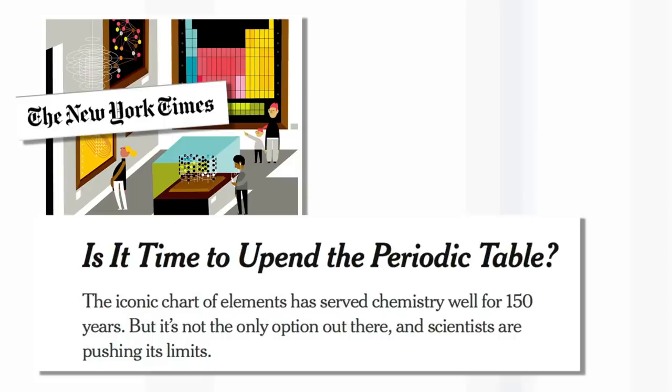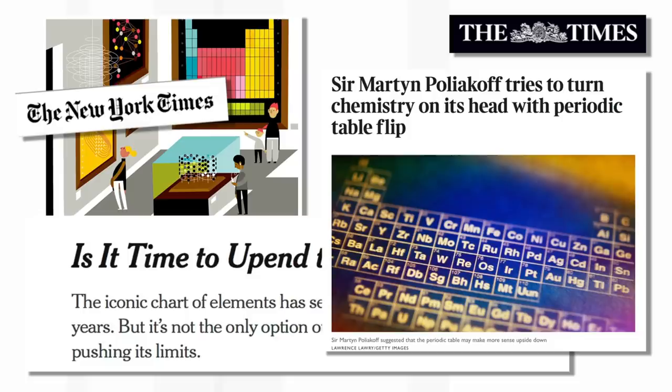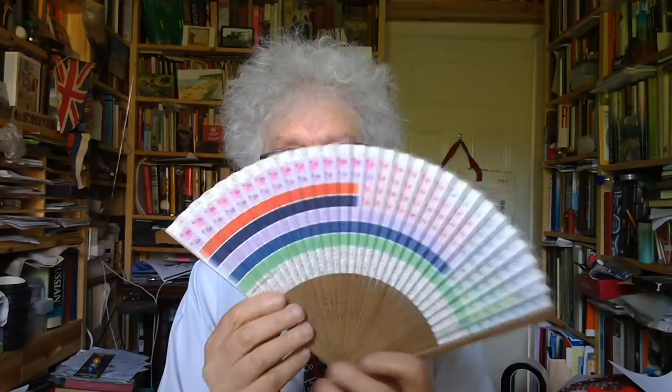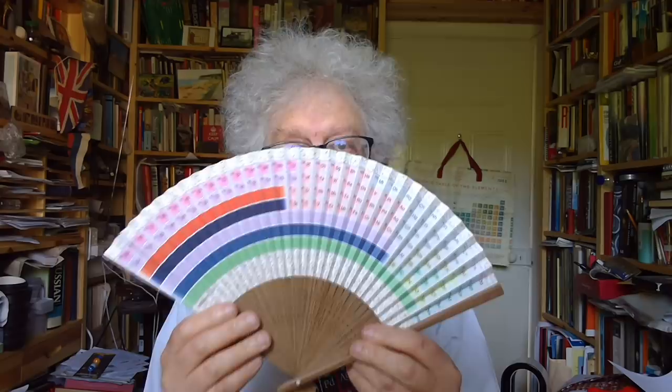There were some quite exciting things. The New York Times and the London Times wrote little articles about it — never had my research in the popular press before. And then it caused quite a sensation in Japan. A museum in Japan included a version of the periodic table in their display for the International Year of the Periodic Table. And best of all, for the closing ceremony of the International Year of the Periodic Table in Tokyo, a special fan was made. You can see it here — quite useful on a hot day — and it has an upside-down periodic table on it.